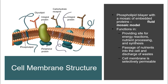In bacterial cell structure, the major difference from eukaryotic cells is in the cell wall and the extracellular components like glycocalyx layer, capsules, and slime layers. The cell membrane is also made up with a phospholipid bilayer with a mosaic pattern of protein embedding. The cell membrane functions in providing sites for energy reactions, nutrient processing, and synthesis. It also acts as a passage of nutrients into the cell and discharging wastes out of the cell, and it is selectively permeable — allowing only certain molecules to move in and out.